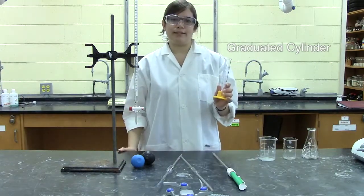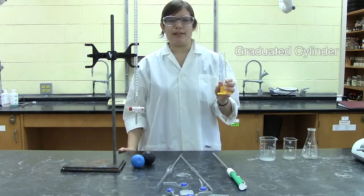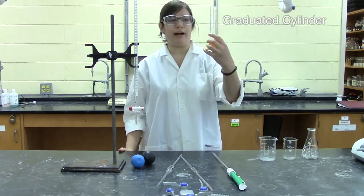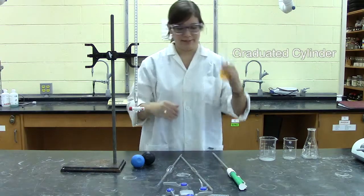Next we have the graduated cylinder which is good when you need a more precise measurement. It's accurate up to 0.1 milliliters. Just be sure when you're reading it that you have it at eye level and are reading from the bottom of the meniscus.